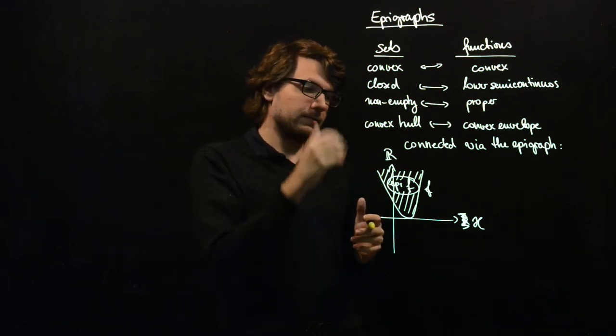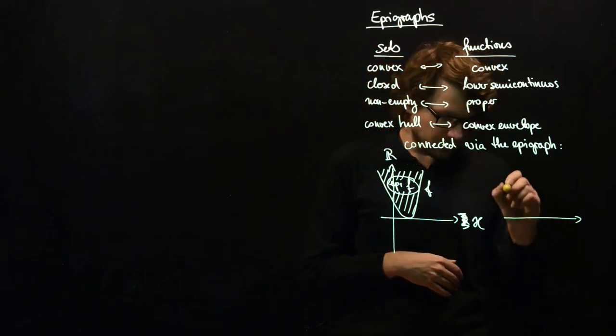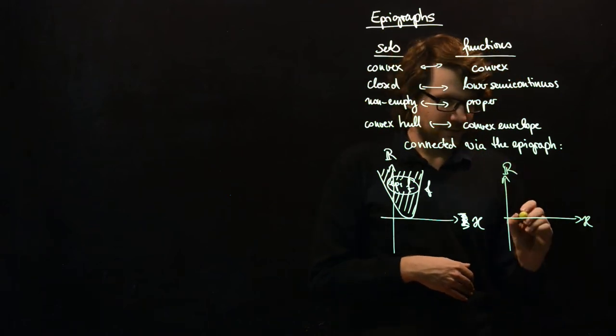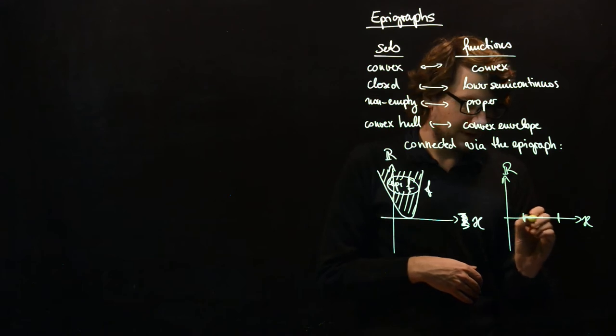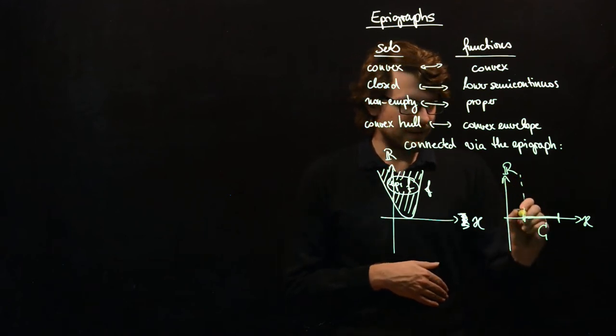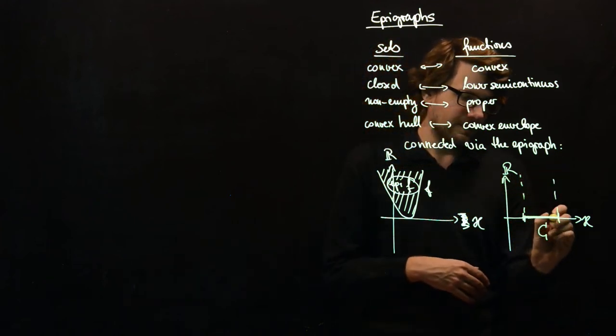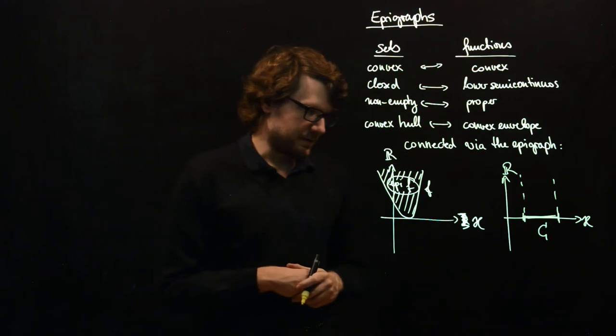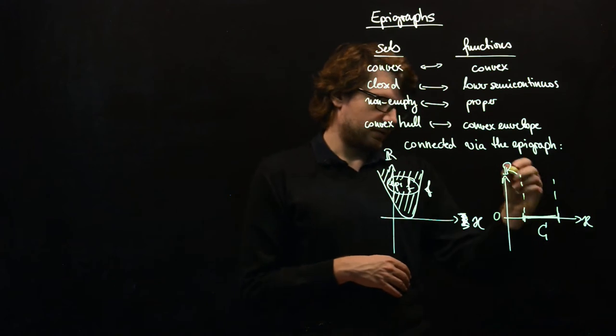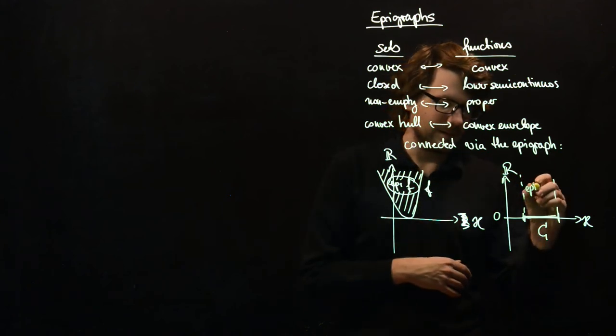Another thing how these properties are connected are indicator functions. So if you have, I also have to draw this in one dimension here. So whenever you have a set C here, then you have this indicator function, which is zero on C and plus infinity otherwise. So the graph of this is only this line here. So the line is at zero,